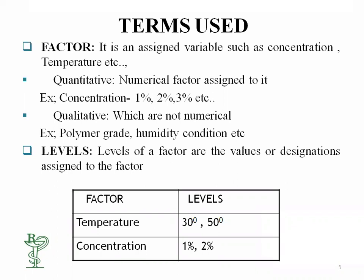'Levels' are related to the factor — they may be higher, middle, or lower. The levels of a factor are the values or designations assigned to that factor. For example, if we use 1, 2, and 3 percent, the zero level is 2 percent, the minus-one level (lower) is 1 percent, and the plus-one level (higher) is 3 percent. Similarly, levels might be 10, 20, and 30 percent depending on the data, literature, or logic applied.